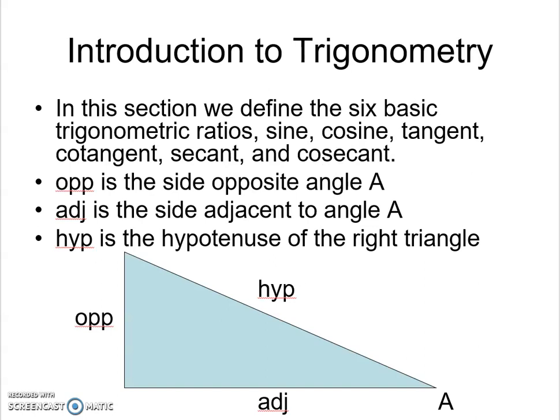But of course we begin with a simple introduction by looking at the six basic trig ratios: sine, cosine, tangent, cotangent, secant, and cosecant. And we do so by labeling an angle and then once that angle is selected we label the sides opposite, adjacent, and hypotenuse.